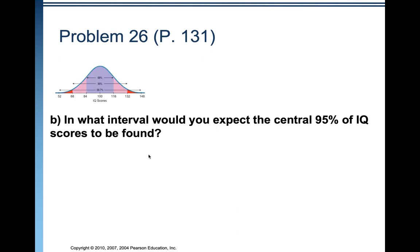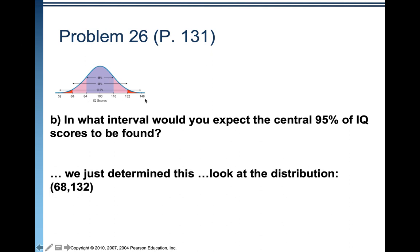I have this picture as a reference because we're going to use it to find all kinds of information. For part B: in what interval would you expect the central 95% of the IQs to be found? We know exactly what that is — it's going to be from 68 to 132.